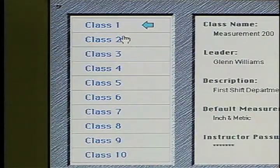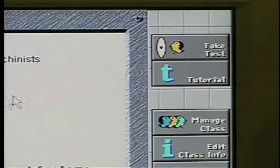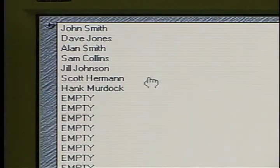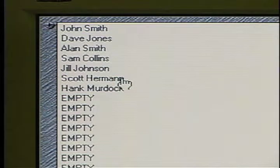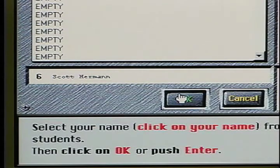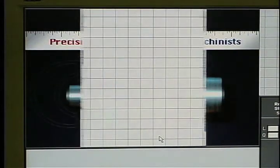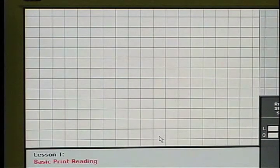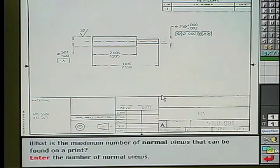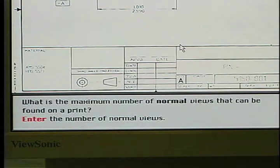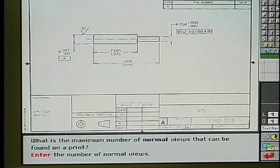After a person selects their class and clicks on the Take a Test button, the computer asks the individual to select their name from the list, click OK, and then enter their password. If they have been registered in that class, the test begins. The first question then appears. In the text box at the bottom of the screen, the text of question 1 is displayed. Because some students may have poor reading skills, each test question is provided both orally and in text form. What is the maximum number of normal views that can be found on a print? Enter the number of normal views.